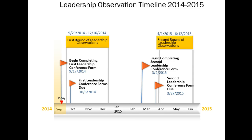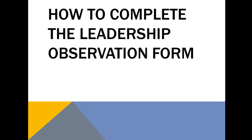The second round of leadership observations will begin in the spring. We will start working on those conference forms March 2nd and they will be due March 27th. The second round of leadership observations will begin April 1st and go through June 12th.